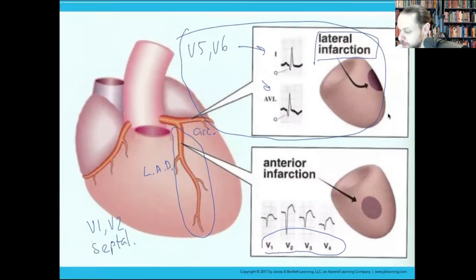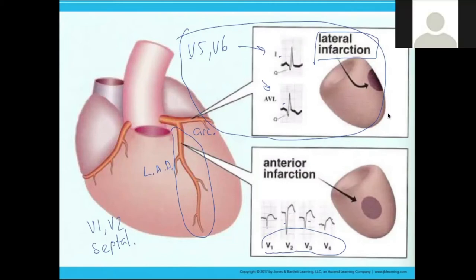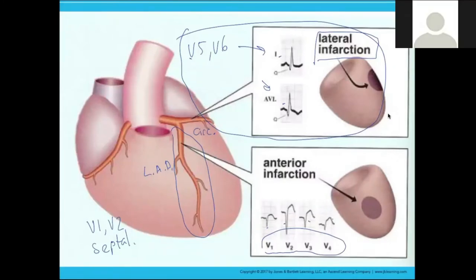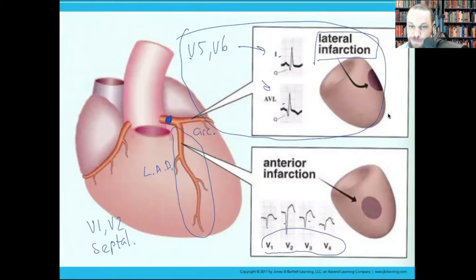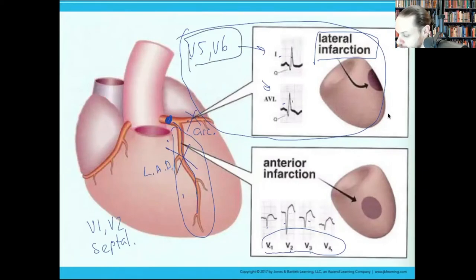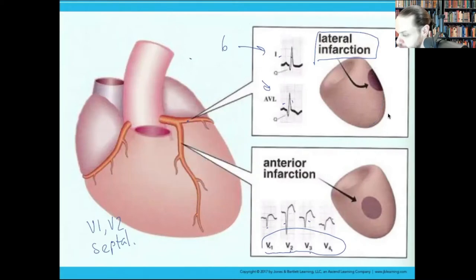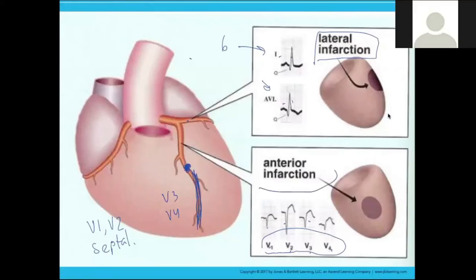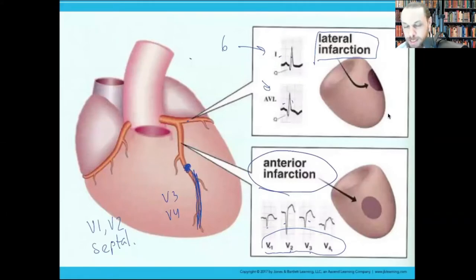What if you have elevations in V5, V6, I, aVL, and also V1, V2, V3, V4? Then the blockage is proximal — proximal to both the circumflex and LAD territories. If I only have elevations in V3 and V4, the blockage is probably distal, only blocking the anterior wall — so I just have an anterior infarction. The elevation pattern gives you a rough idea of blockage location.